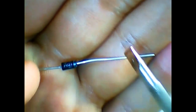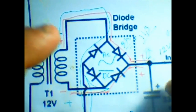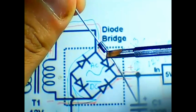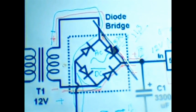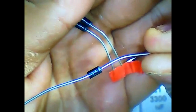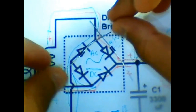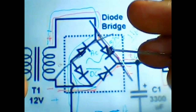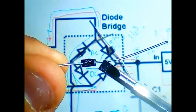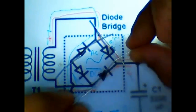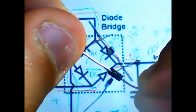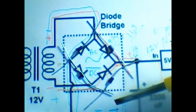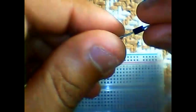Here we have four diodes. You see this silver lining on the diode — this shows you how the current will flow. It can go from one direction but not the other. We're going to place the diodes on the breadboard like this for the first, second, third, and fourth diodes.